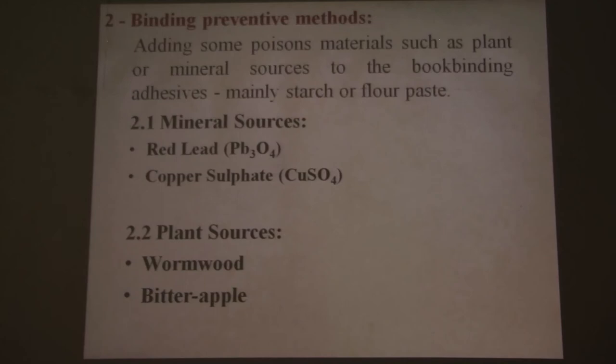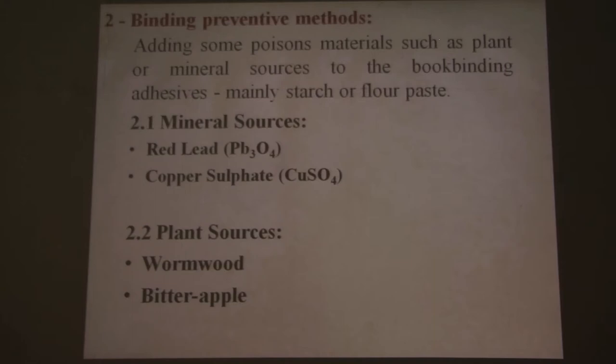The second main category is about binding preventive methods, which usually involved adding some poisonous material during the binding process — mainly to the starch or flour paste. It has two sources: one is mineral sources, using red lead and copper sulfate; the second is plant sources using two plants, wormwood and bitter apple.